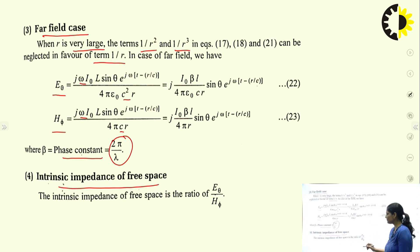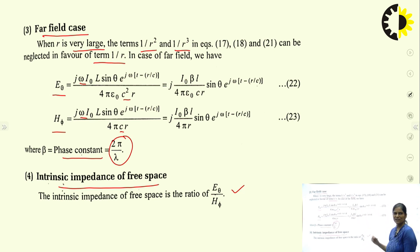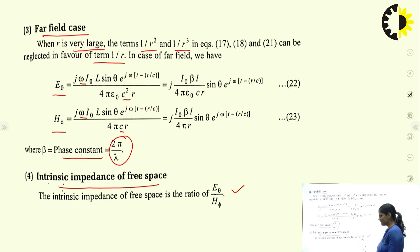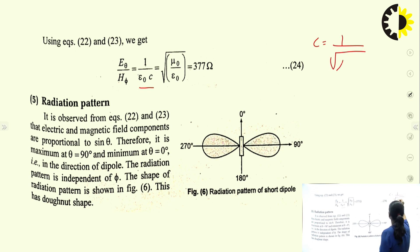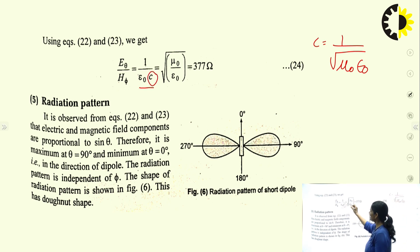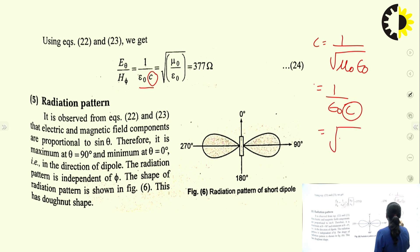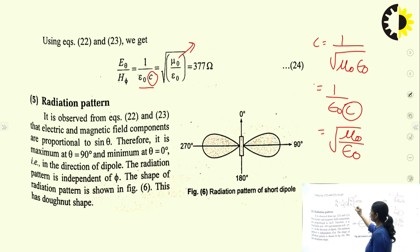The intrinsic impedance of free space is the ratio η = E_θ / H_φ. Dividing the E_θ equation by H_φ and substituting c = 1/√(μ_0 * ε_0), we get η = 1/(ε_0 * c) = √(μ_0/ε_0). Substituting the values of μ_0 and ε_0, the intrinsic impedance equals 377 ohms.